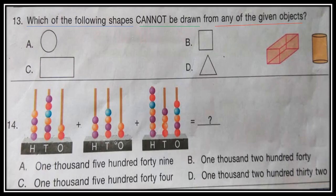Question 13: Which of the following shapes cannot be drawn from any of the given objects? See the given objects on the right side and choose from options A, B, C, and D which shape cannot be drawn from these objects.